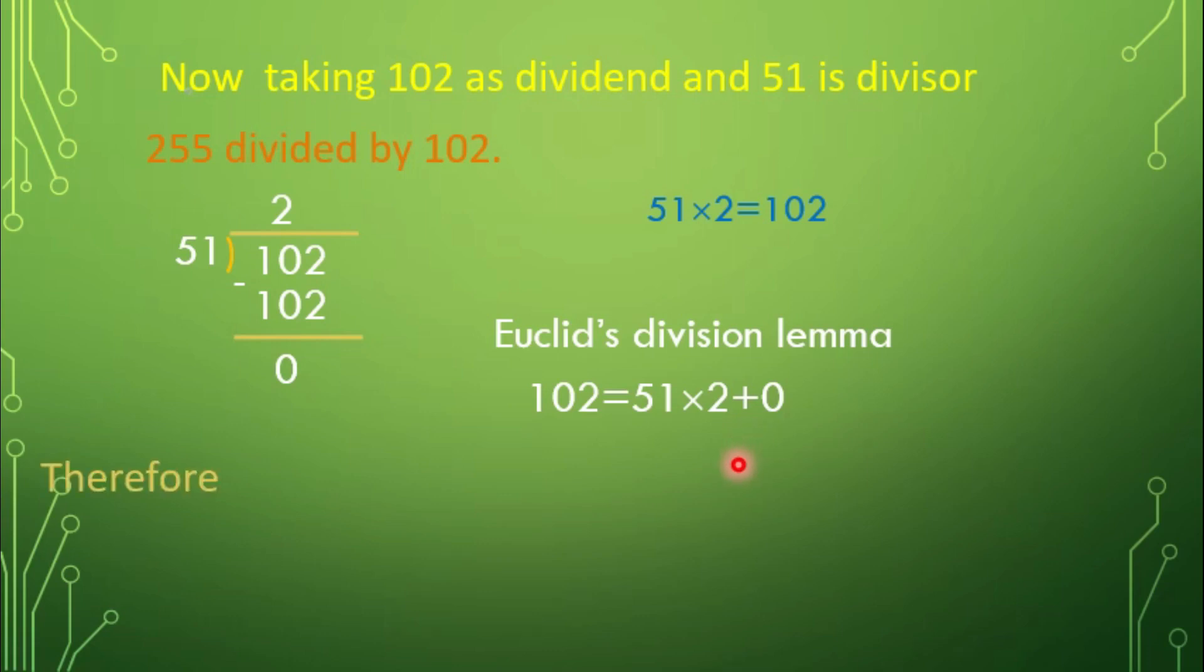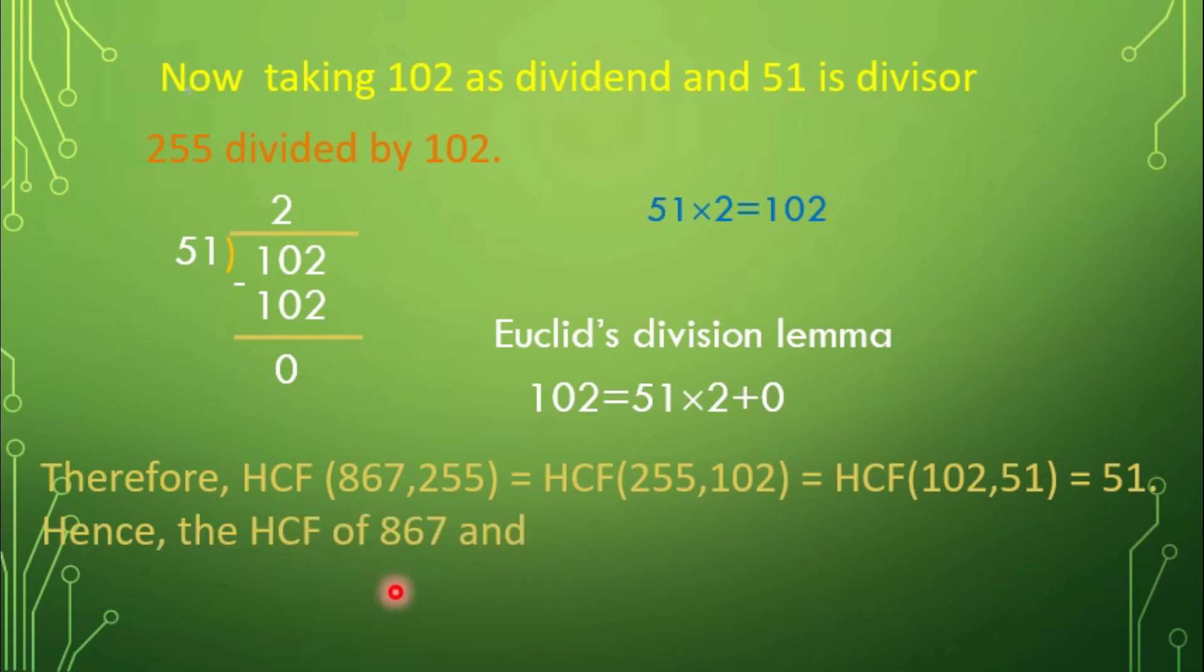Therefore, HCF of 867 and 255 equals HCF of 255 and 102 equals HCF of 102 and 51 equals 51. Hence, the HCF of 867 and 255 equals 51.